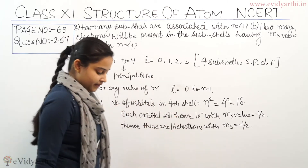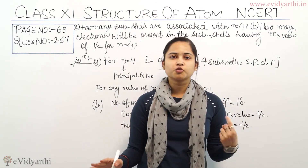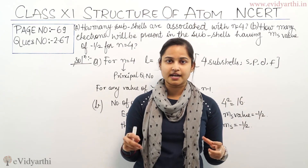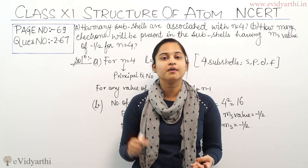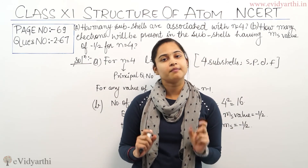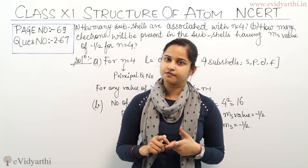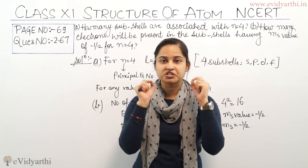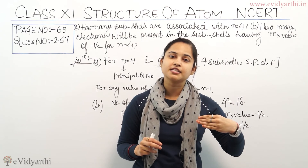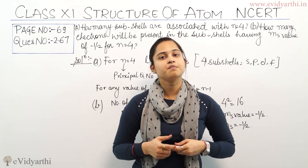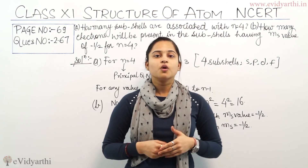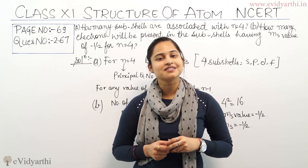To summarize: in 16 orbitals, if we count, we have 32 electrons total — each orbital has 2 electrons with different spin quantum numbers, so 16 into 2 equals 32 electrons. Out of these 32 electrons, 16 will have spin quantum number ms equals minus half. So there are 16 electrons which have spin quantum number ms equals minus half.